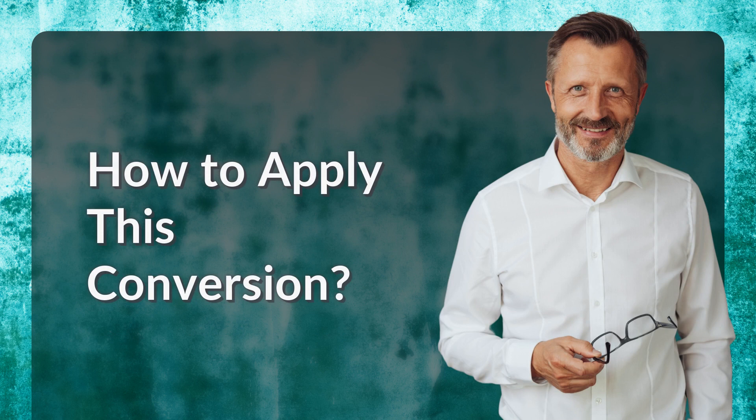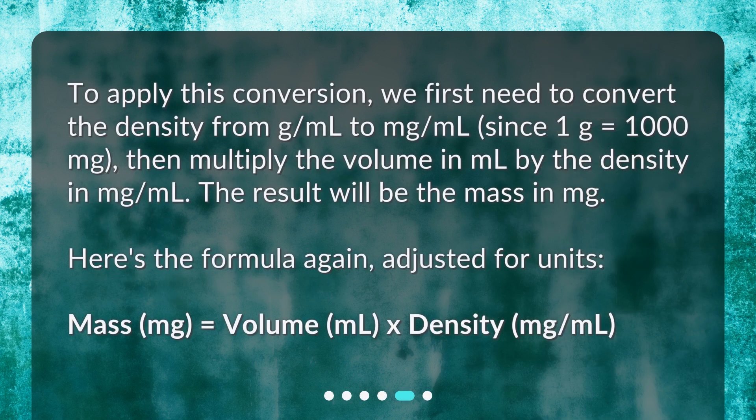How to apply this conversion? To apply this conversion, we first need to convert the density from grams per milliliter to milligrams per milliliter. Since 1 gram equals 1000 milligrams, then multiply the volume in ML by the density in milligrams per milliliter. The result will be the mass in MG. Here's the formula again, adjusted for units: Mass (MG) = Volume (ML) × Density (mg/mL).